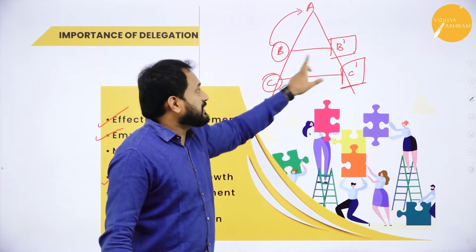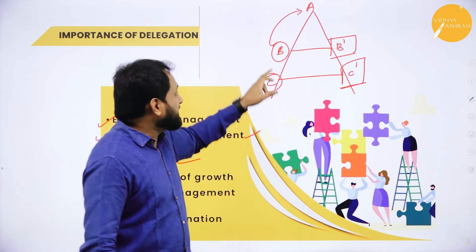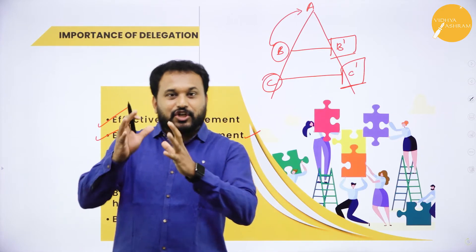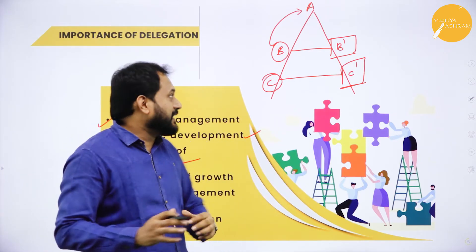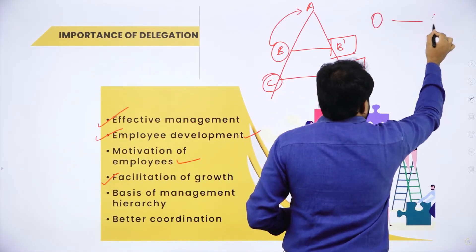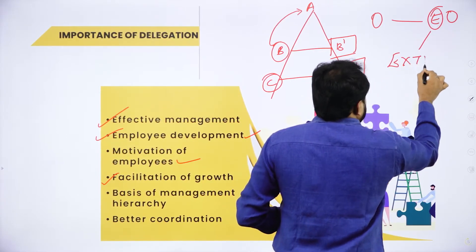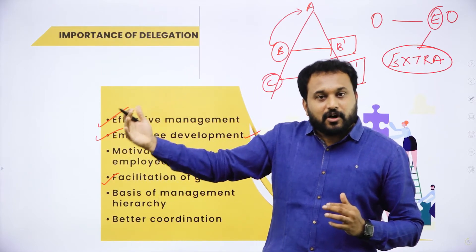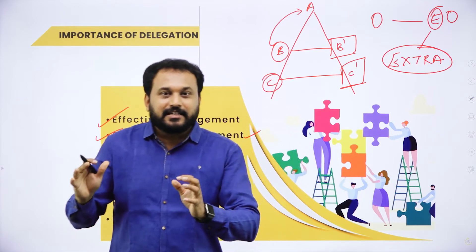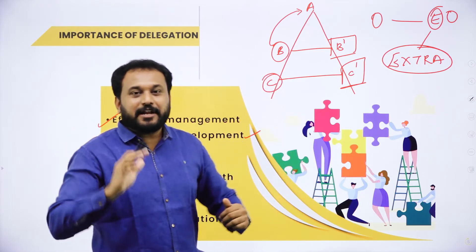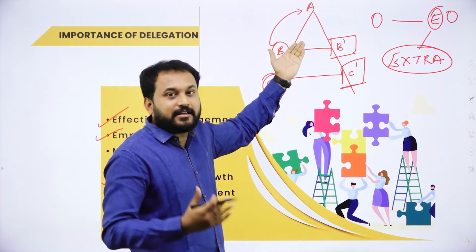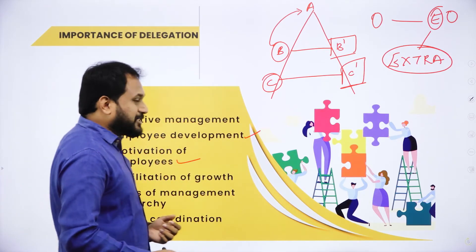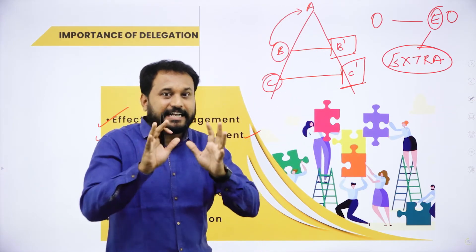Fourth, facilitation of growth: B got the delegation because he has something extra compared to B-dash. The difference between being ordinary and extraordinary is that 'extra.' When you are recognized positively, the hierarchical culture supports upward movement — you go to the next level. Fifth, basis of management hierarchy: performing well leads to hierarchical advancement.